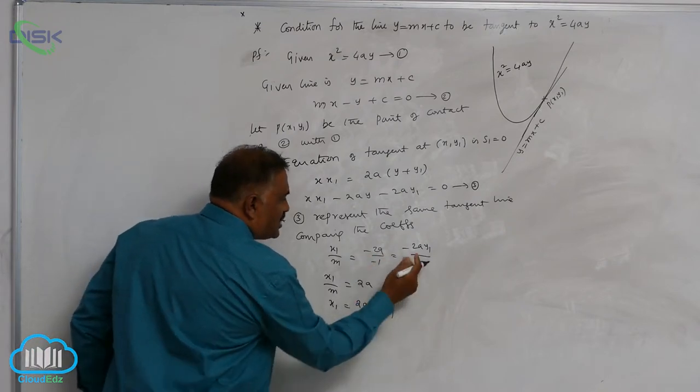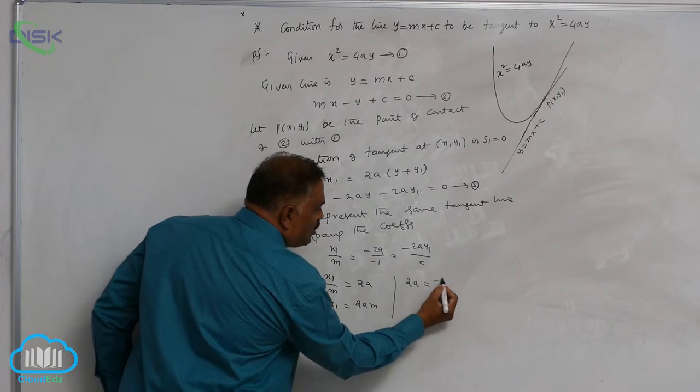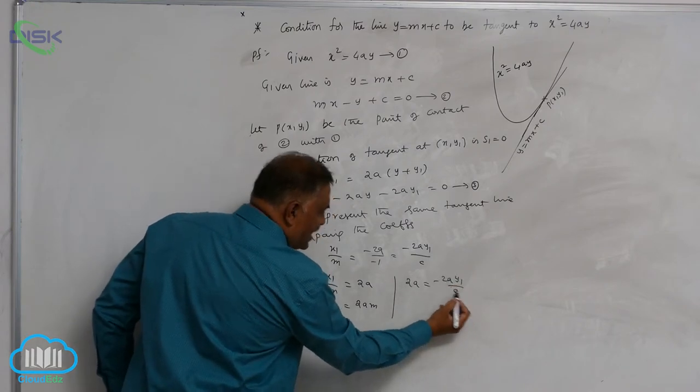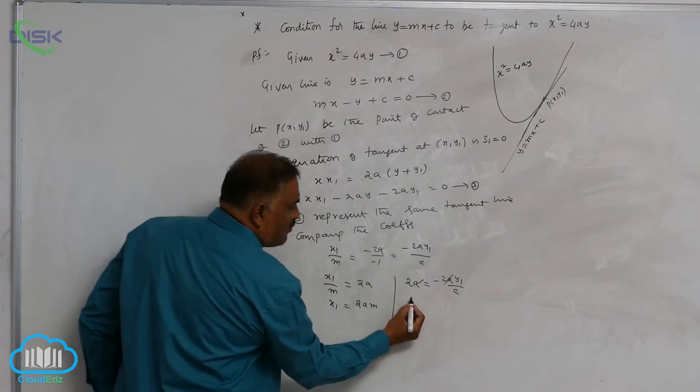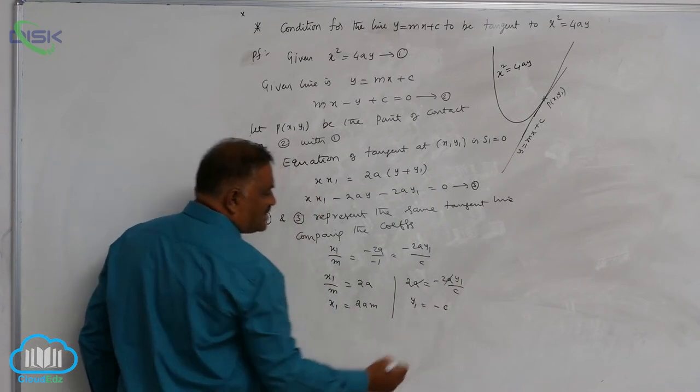Again you take these two: 2a is equal to minus 2ay1 by c. You see that 2a gets cancelled, y1 is equal to minus c.